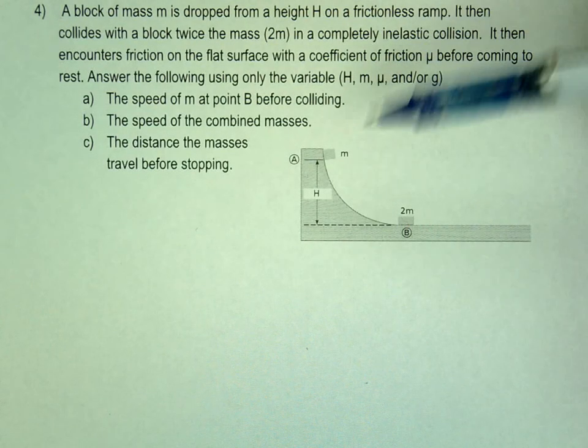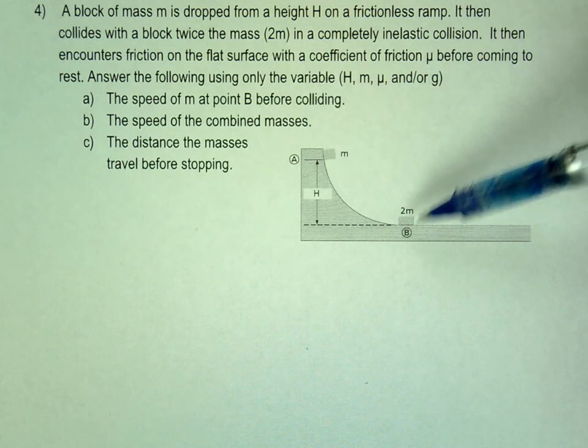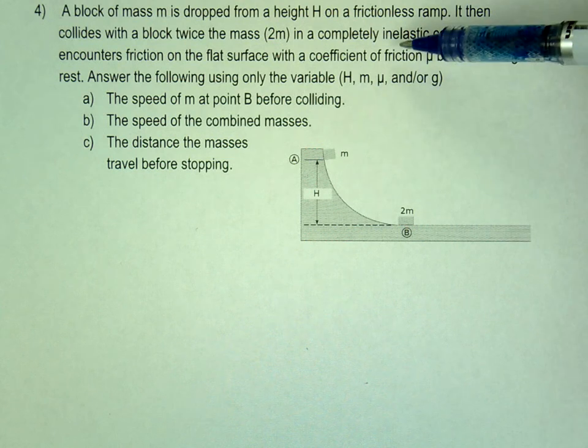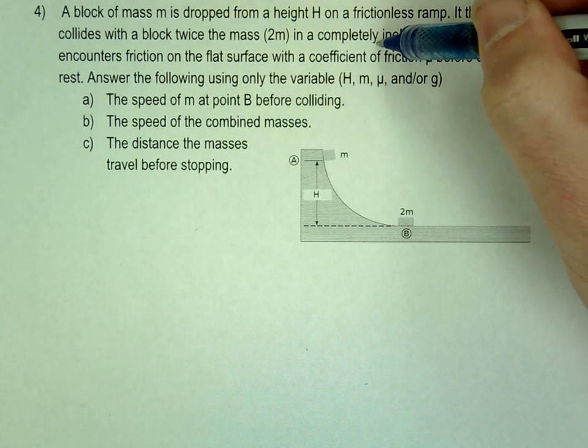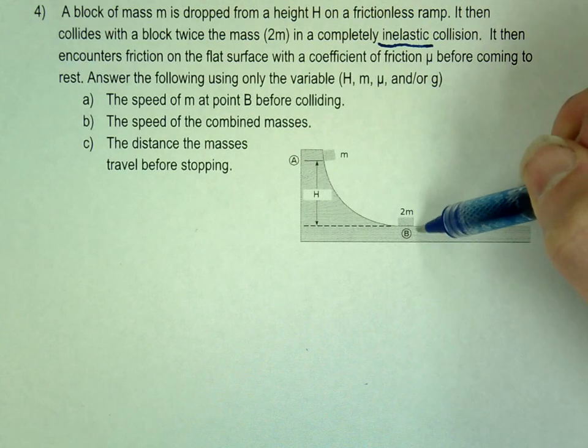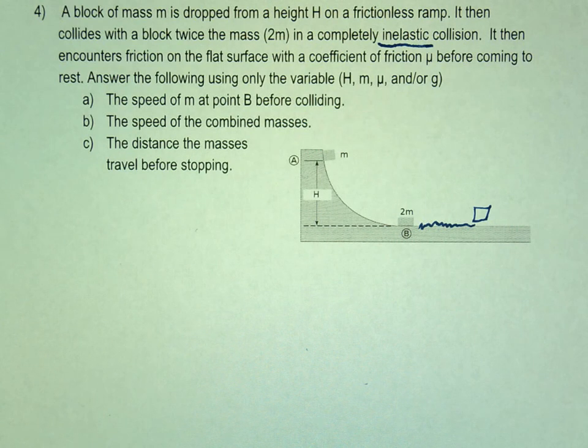In this particular problem, we have this mass coming down the ramp, right? And it's going to collide with the second mass. They're going to move off together in an inelastic collision, which means they stick together. And then we encounter some friction, and it's going to eventually stop right here.